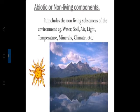Climate is the average temperature in a region over a long period of time. It includes temperature, wind, precipitation and sunlight. The climate and composition help to determine the plant community. Flora refers to the plant community, and fauna refers to the animal community. So climate and flora together determine the animal community.